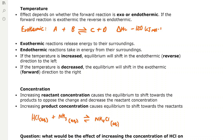If the temperature of this exothermic reaction is increased, the equilibrium will shift in the endothermic direction — the reverse direction to the left, towards A and B. Oppositely, if the temperature is decreased, the equilibrium will shift in the exothermic forward direction to the right, towards C and D. This is because the equilibrium shifts to counteract the change: increasing temperature shifts the equilibrium left to decrease temperature, since endothermic reactions take in energy from surroundings.